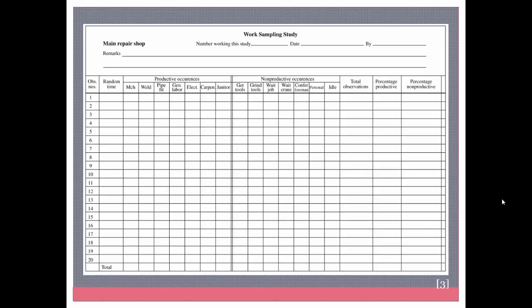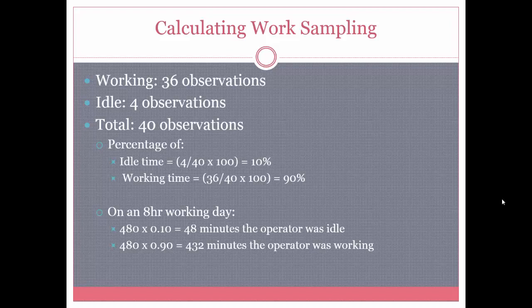Now, how to calculate a simple work sampling. All you have to do is count the observations where the worker is working versus idle. For instance, if they were working for 36 observations and idle for 4, with a total of 40 observations, the idle percentage is 4 divided by 40 times 100, which is 10%, and working time is 90%. Based on an 8-hour workday of 480 minutes, they were idle for 48 minutes and working for 432 minutes.